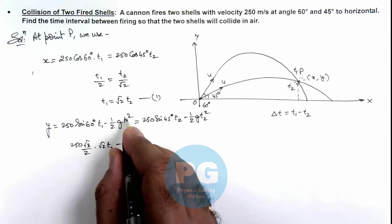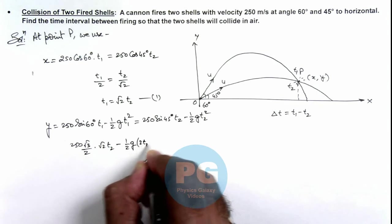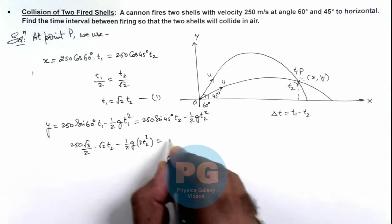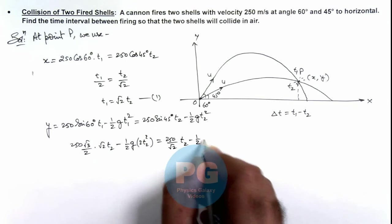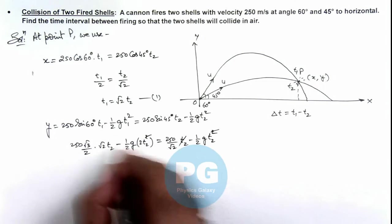½g. This is √2 t₂ squared, so this will be 2t₂². This equals 250/√2 t₂ minus ½g t₂². Here this square and t₂ gets cancelled out.